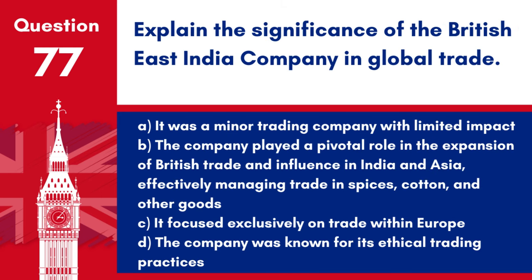Question 77: Explain the significance of the British East India Company in global trade. a. It was a minor trading company with limited impact. b. The company played a pivotal role in the expansion of British trade and influence in India and Asia, effectively managing trade in spices, cotton, and other goods. c. It focused exclusively on trade within Europe. d. The company was known for its ethical trading practices. Answer: b. The British East India Company was instrumental in establishing British dominance in global trade during the 17th to 19th centuries.